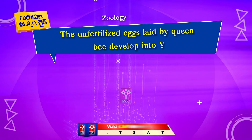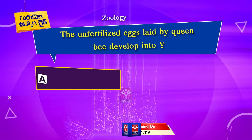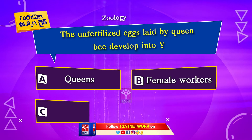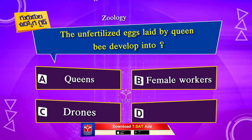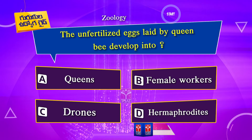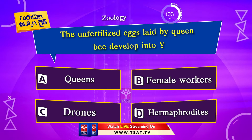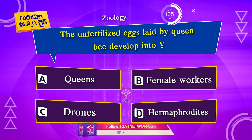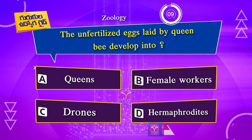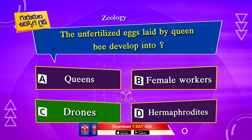Next question. The unfertilized eggs laid by the queen bee develop into: Option A. Queens. Option B. Female workers. Option C. Drones. Option D. Hermaphrodites. The correct answer is Option C. Drones.